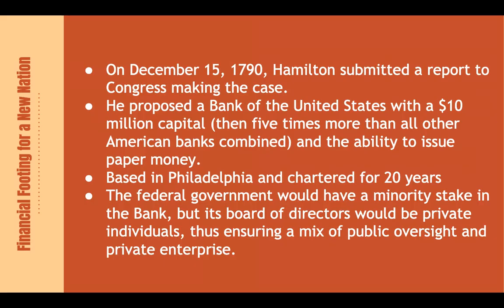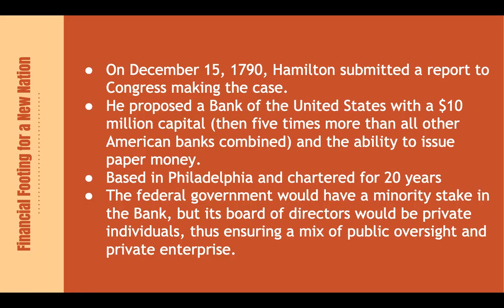In December of 1790, Hamilton submitted a report to Congress making the case. He proposed a Bank of the U.S. with a $10 million capital — at the time, five times more than all other banks combined. It would give the National Bank the ability to issue paper money, be based in Philadelphia, and be chartered for 20 years. The federal government would have a minority stake in the bank as minority shareholders, but its board of directors would be private individuals, ensuring a mix of both public oversight and private enterprise.